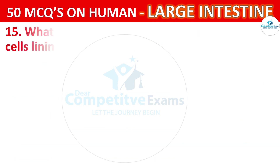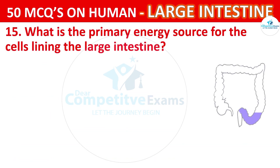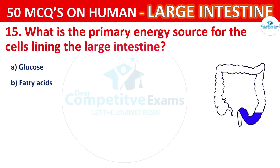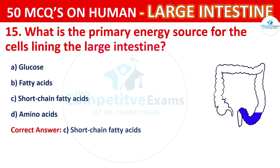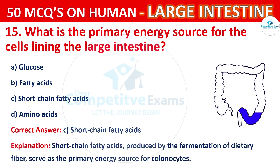Question number 15. What is the primary energy source for the cells lining the large intestine? The options are: Glucose, Fatty acids, Short-chain fatty acids, or Amino acids. The correct answer is C, that is Short-chain fatty acids. Short-chain fatty acids, produced by the fermentation of dietary fiber, serve as the primary energy source for colonocytes.